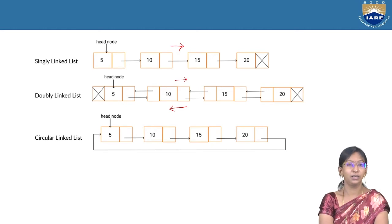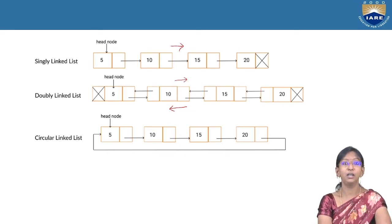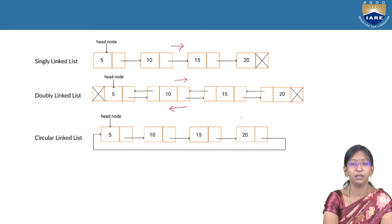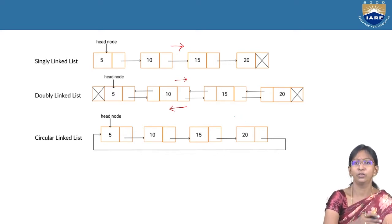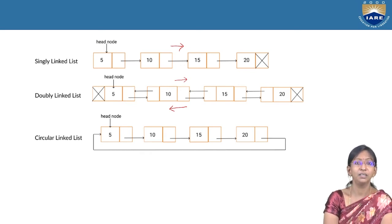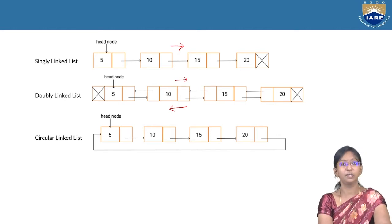Coming to circular-linked list, it is an extension of single-linked list where the last node holds the address of the first node. That is the advantage of circular-linked list — if you are at the last node and want to access the first node, you need not start from scratch. By simply holding the address of the first node, you can run from the last node to the first node. This is the beauty of circular-linked list which overcomes a few disadvantages of single-linked list.